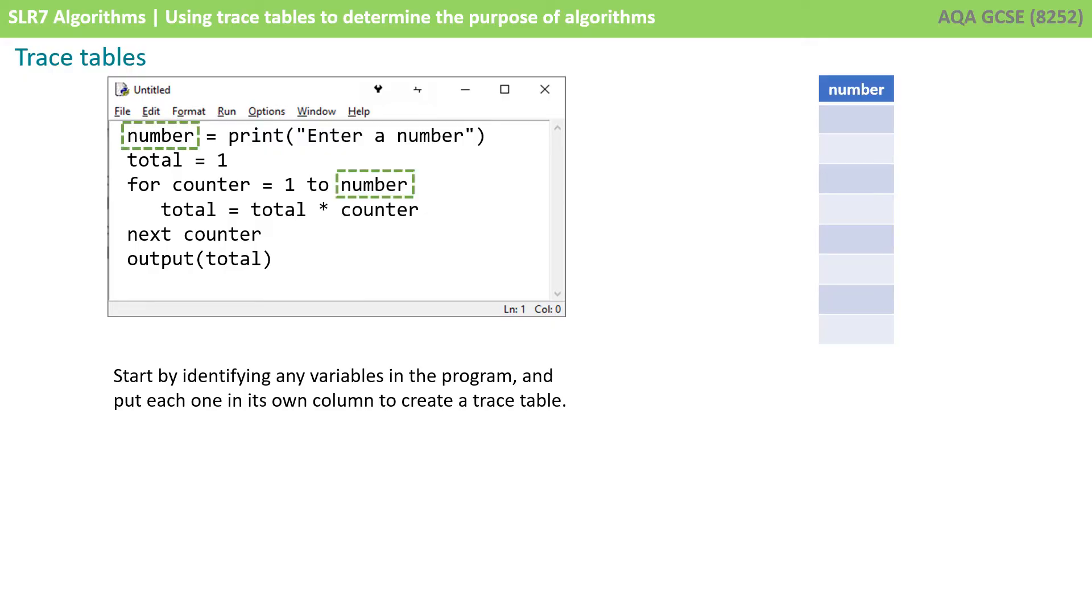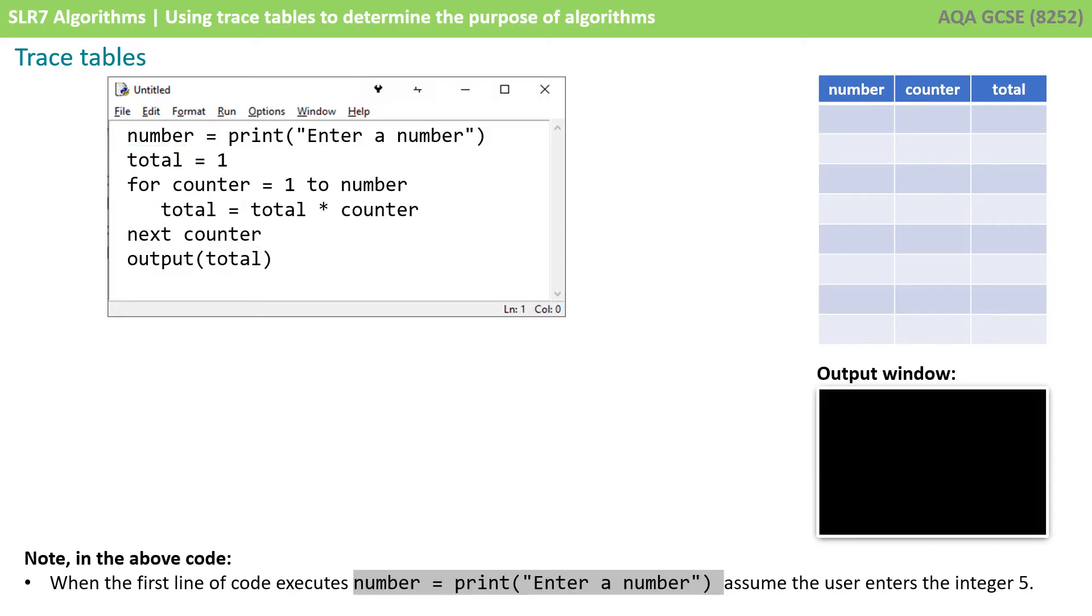We can see we've got a variable called number, so that goes into a column. We've got a variable called counter, so that goes into another column. And we've got a variable called total, so that goes into a third column. We've also popped an output window down here where we're going to show any output as it occurs.